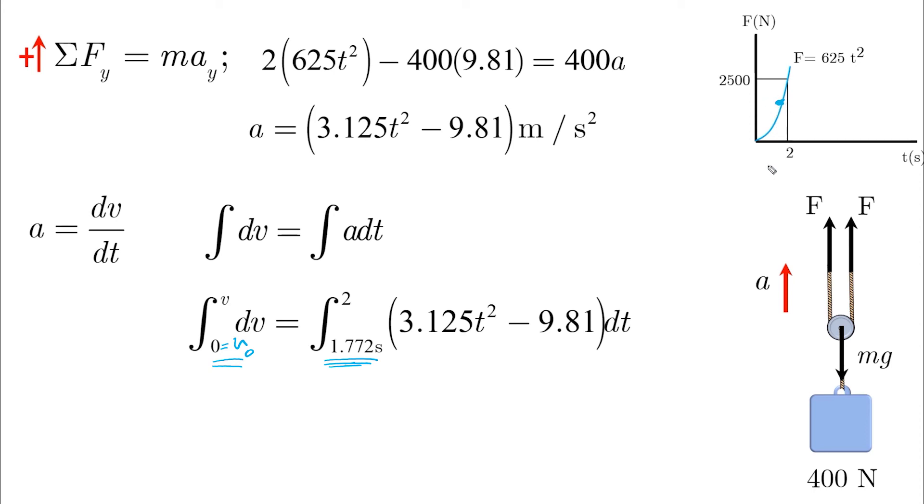This is where most students make the mistake. They just put time equals zero here and get the wrong answer. If you do that, then you are assuming that this block has started to move from t equals zero, which is wrong. We just proved that the block will start to have its initial velocity when the time is equal to 1.77.